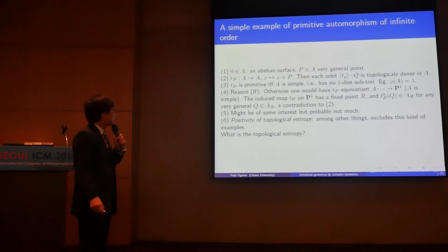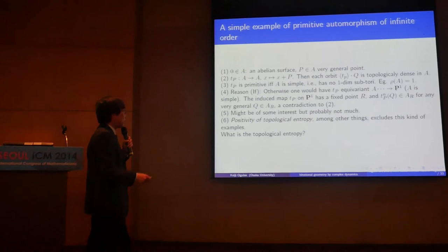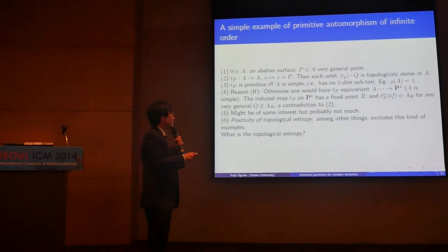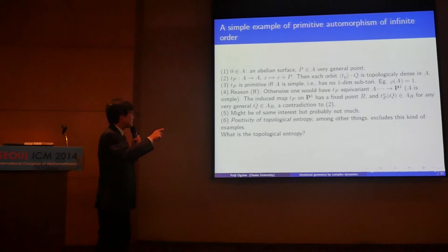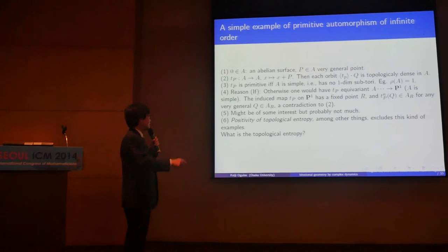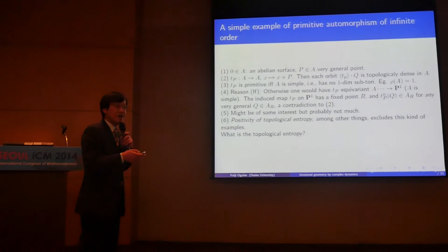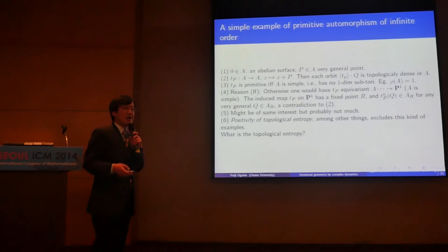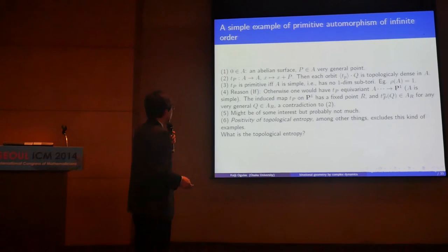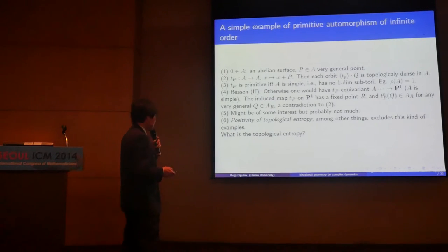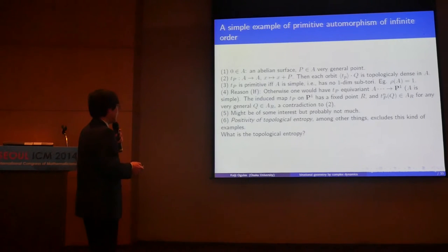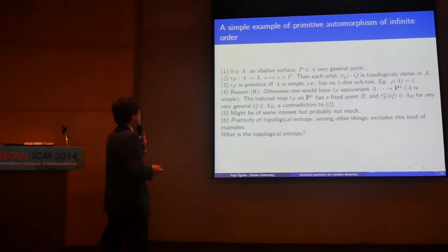This is one example, but maybe not so interesting, because the automorphism does not change things so drastically. Positivity of topological entropy is one invariant which excludes this kind of example.